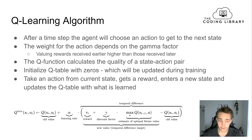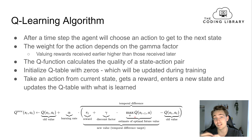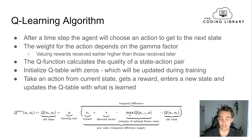Inside the parentheses we have temporal difference learning. We have the reward for the given time step — we take an action and receive a reward. Then we have the discount factor gamma, which scales the maximum Q-value of the next state. So max Q here is the action with the highest Q-value in the next state, scaled by gamma. Then we subtract the old Q-value from that to get the temporal difference.